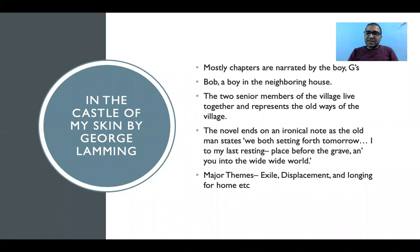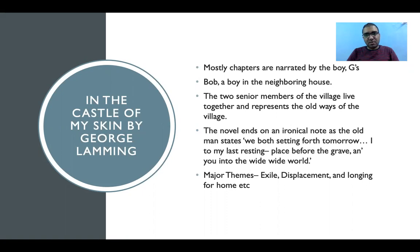Most chapters are narrated by the boy, Ji. Some of Ji's friends include Bob, a boy from the neighboring village, and Thama, also a friend of Ji — so there is a group of children. The two senior members of the village, Pa and Ma — the old man and the old woman — live together and represent the old ways of the village.